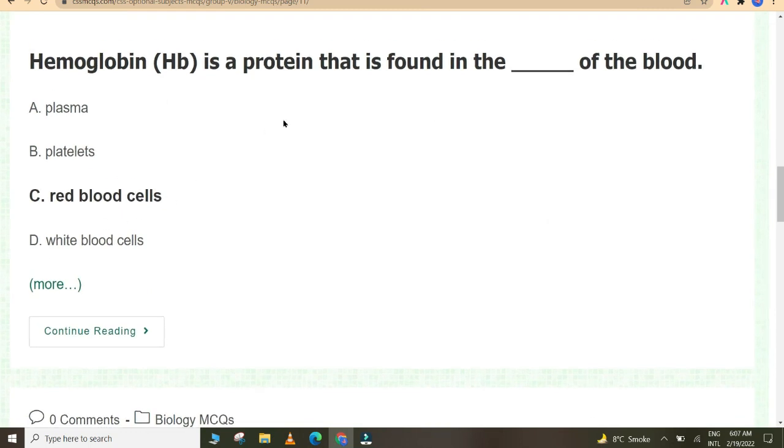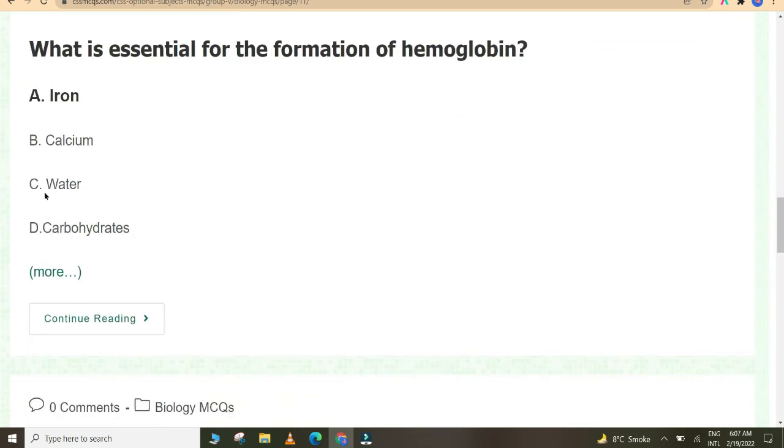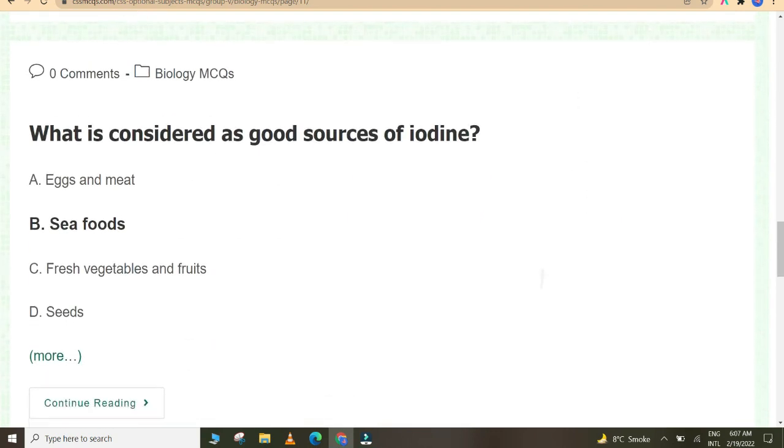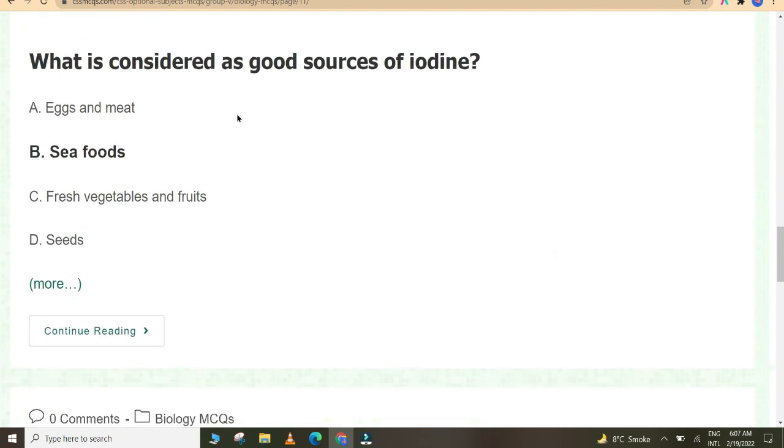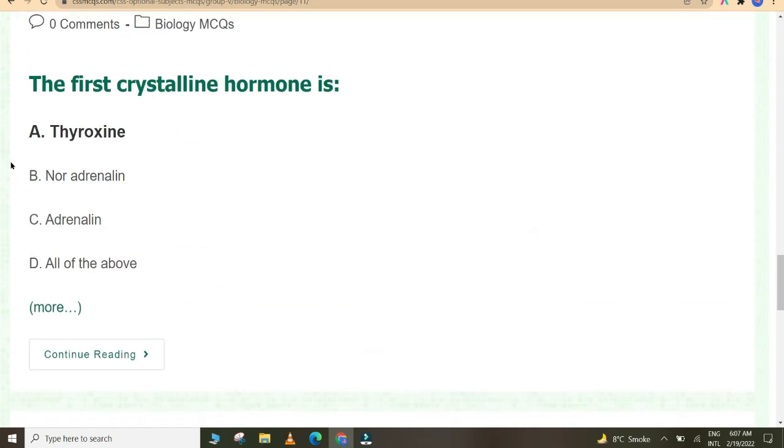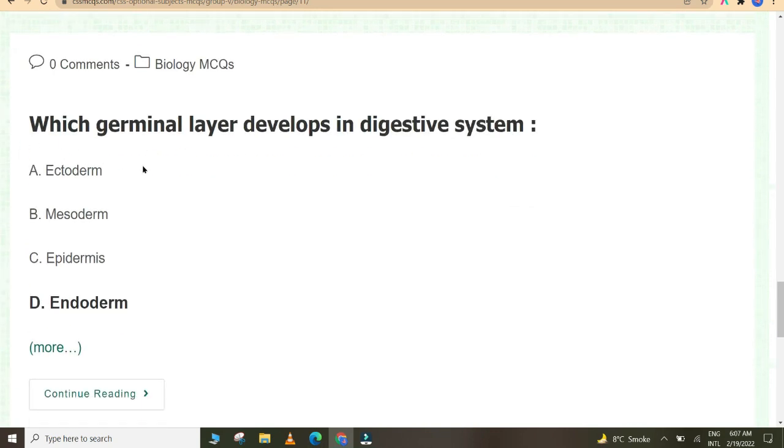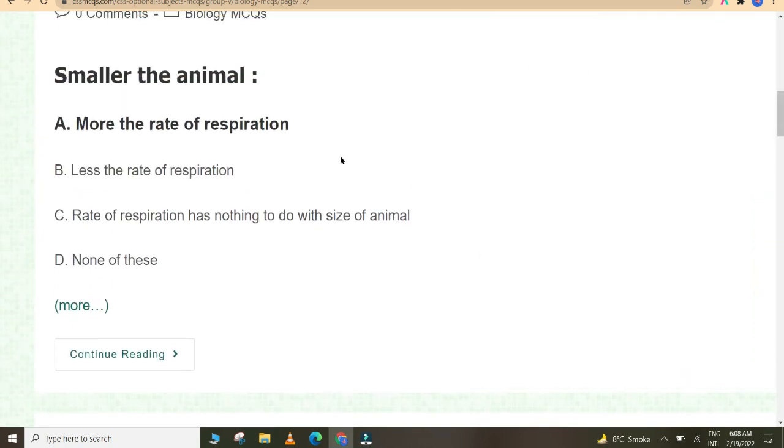What is needed as a source of energy for vital activities of the body? Carbohydrates. Hemoglobin is a protein that is found in the red blood cells. What is essential for the formation of hemoglobin? Iron. What is considered as good sources of iodine? Seafoods. The first crystalline hormone is thyroxine. Which germinal layer develops into digestive system? Endoderm. Smaller the animal, more the rate of respiration.